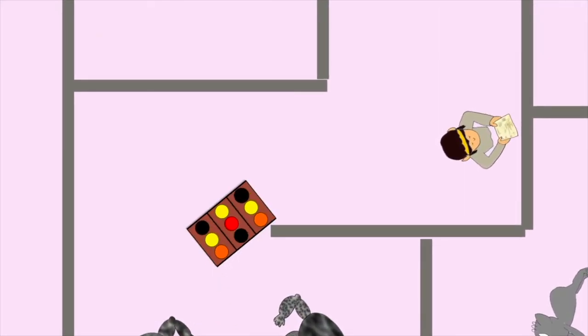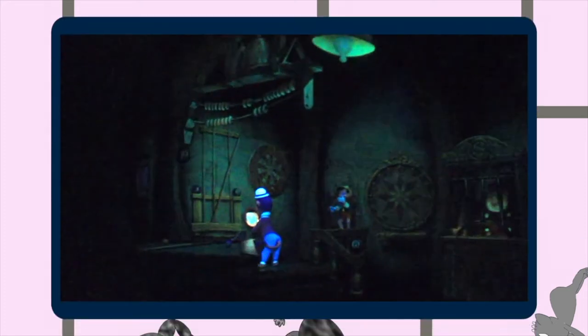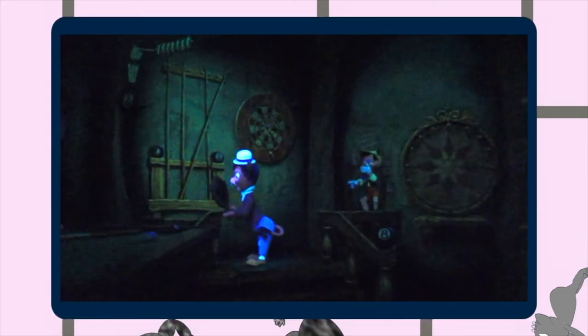Then you swing through Rivendell where you see Elrond reveal the moon letters on the map, kinda like an inverse of the Lampwick transformation on Pinocchio.